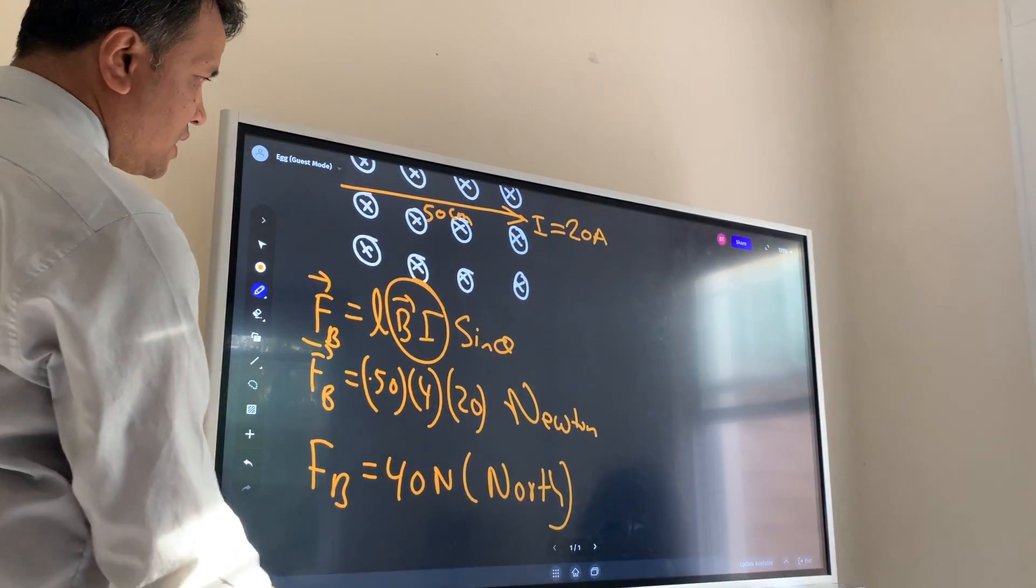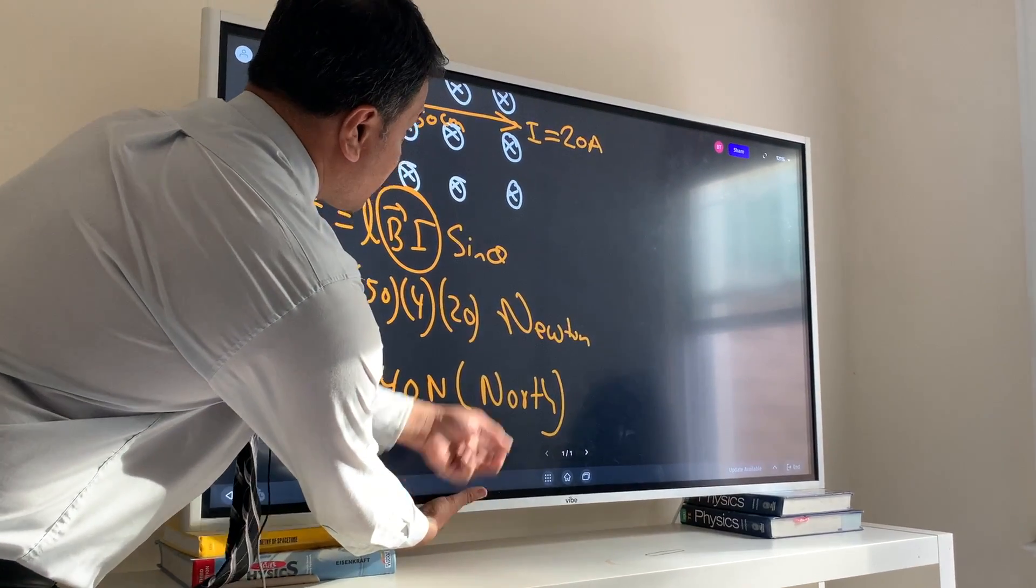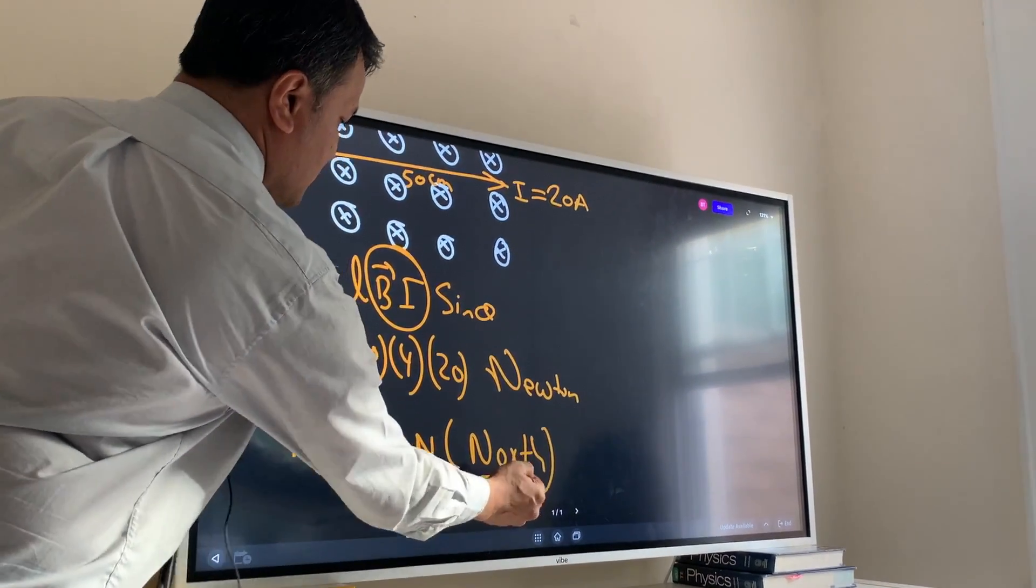Why is it north? Because the direction of the magnetic force is north. Because this is into the page, this is into the page, this one is the direction of the current, direction of the current, and it is to the north. And that's to the north.